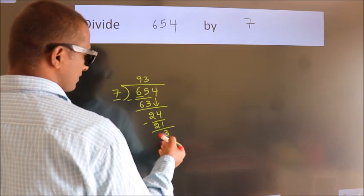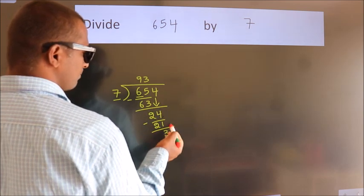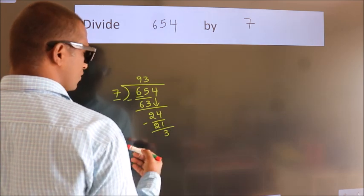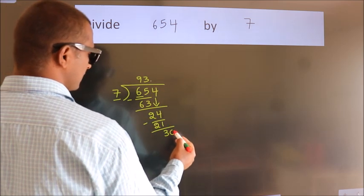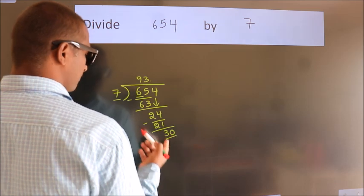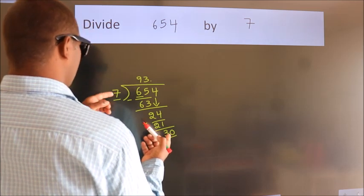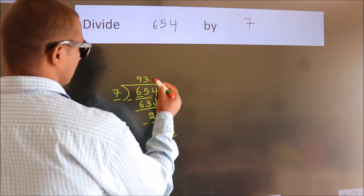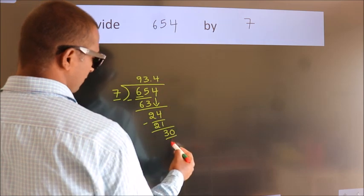After this, no more numbers to bring down. So what we do is we put dot, take 0. So 30. A number close to 30 in 7 table is 7 fours, 28.